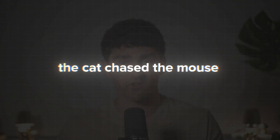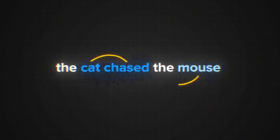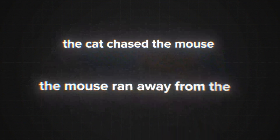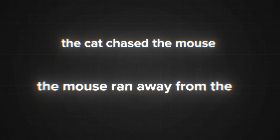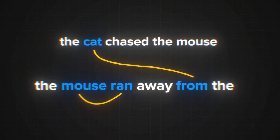ChatGPT does something very similar to us, except it does not read one word at a time — it looks at all words at the same time. Looking back to our example, 'the cat chased the mouse,' ChatGPT will use attention to recognize that cat and chased are related, and that mouse and chased are related. If ChatGPT now wants to complete the next sentence, 'the mouse ran away from the,' it will use attention to recognize that mouse and ran are related, and that from and cat are related. So it will know that the next word needs to be 'cat.'